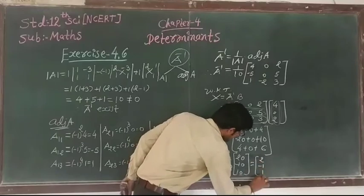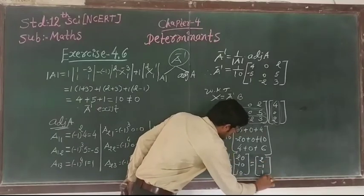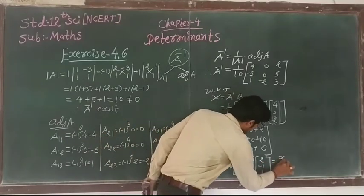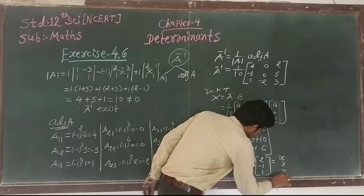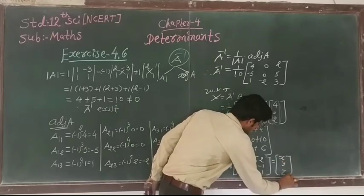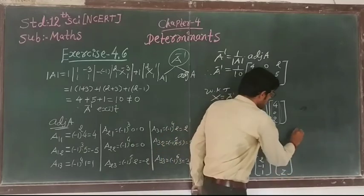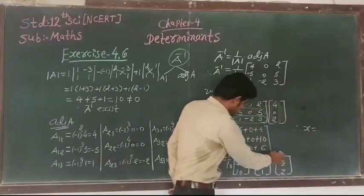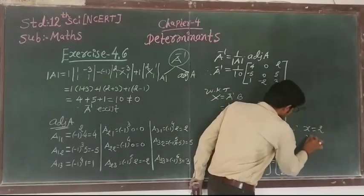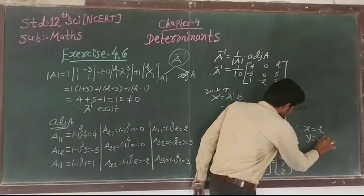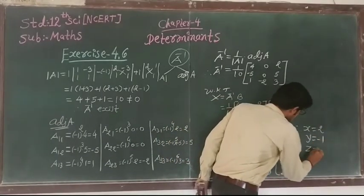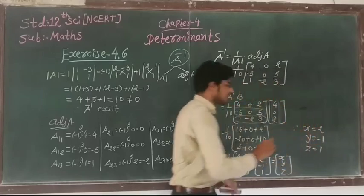So this gives X. We can write X, Y, Z. Therefore X equals 2, Y equals minus 1, and Z equals 1.